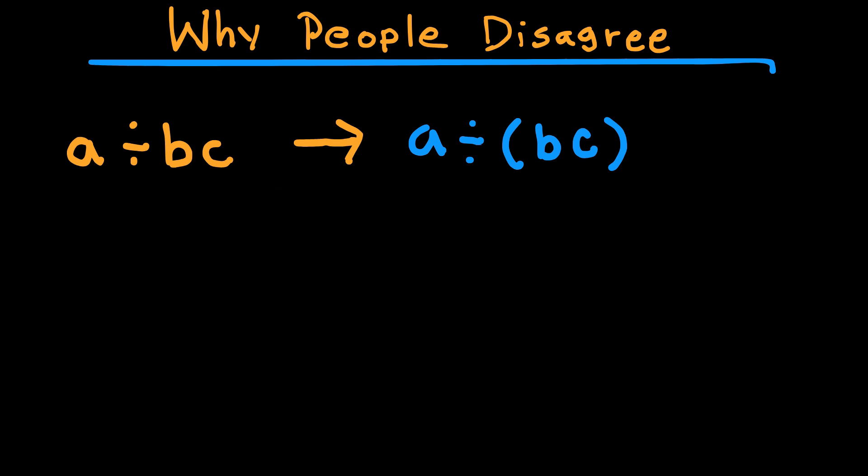Take this example: A divided BC. Some would read this as A divided, open brackets, BC, closed brackets, which makes the division apply to the whole BC product. But others might rewrite the same thing as A divided B times C and solve from left to right. This leads to a huge mess, especially in programming where different languages evaluate expressions differently.